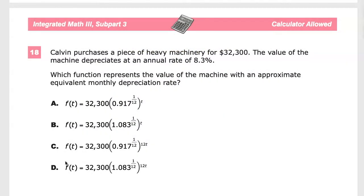Calvin purchases a piece of heavy machinery for $32,300. The value of the machine depreciates at an annual rate of 8.3%. Annual rate matters here.